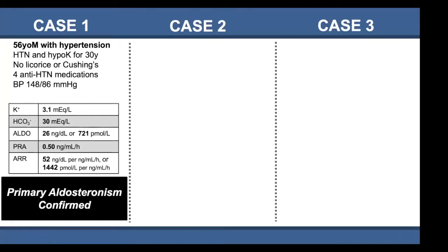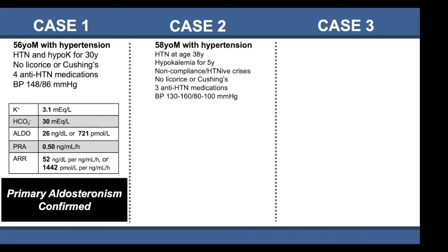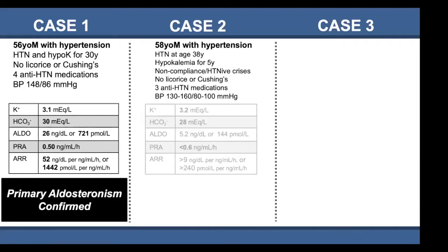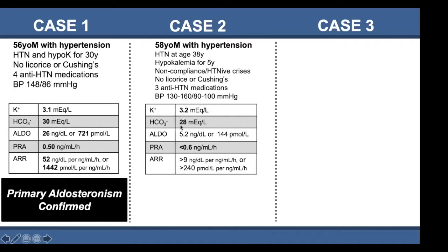The second patient is a 58-year-old man also with hypertension, diagnosed 20 years ago at age 38. He's had repeated hypokalemia for the last five years, has difficulty taking his medication, and has been admitted to the hospital multiple times for hypertensive crisis. He has no signs of Cushing's, doesn't eat licorice, and his blood pressure on three medications is still quite high. His labs show he is hypokalemic and relatively alkalotic.